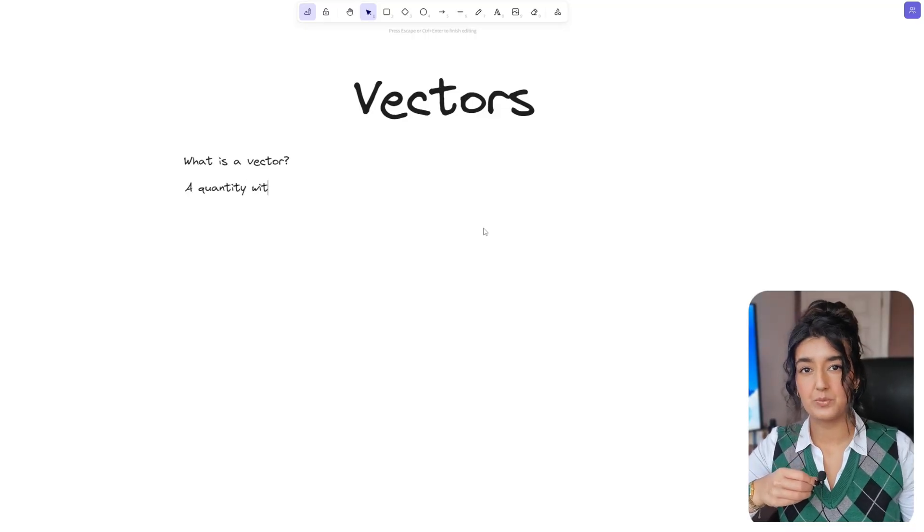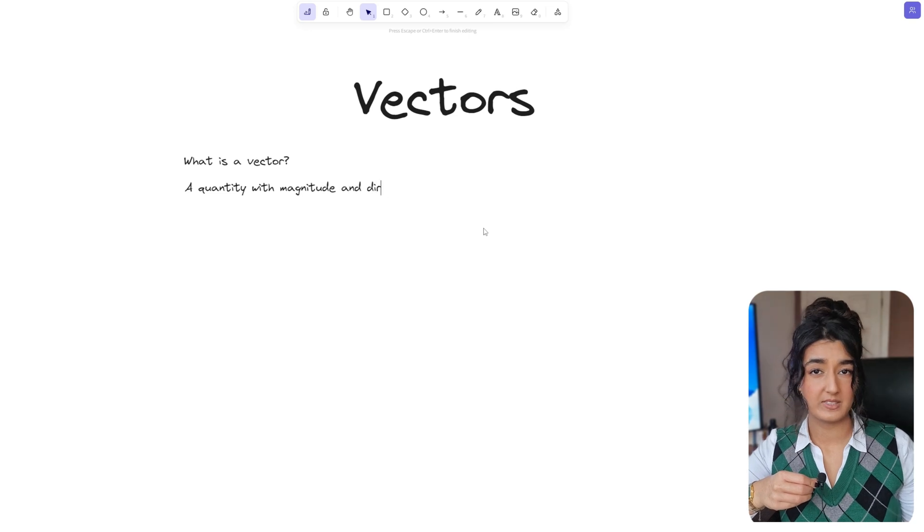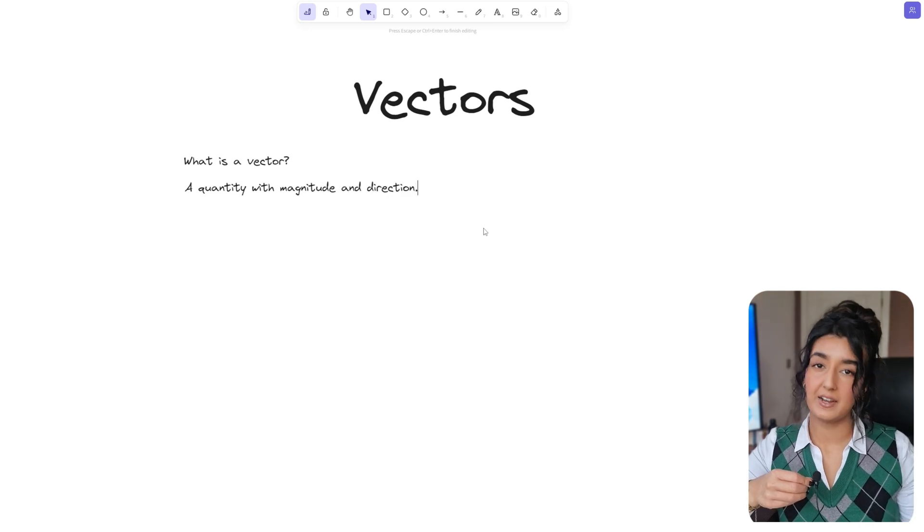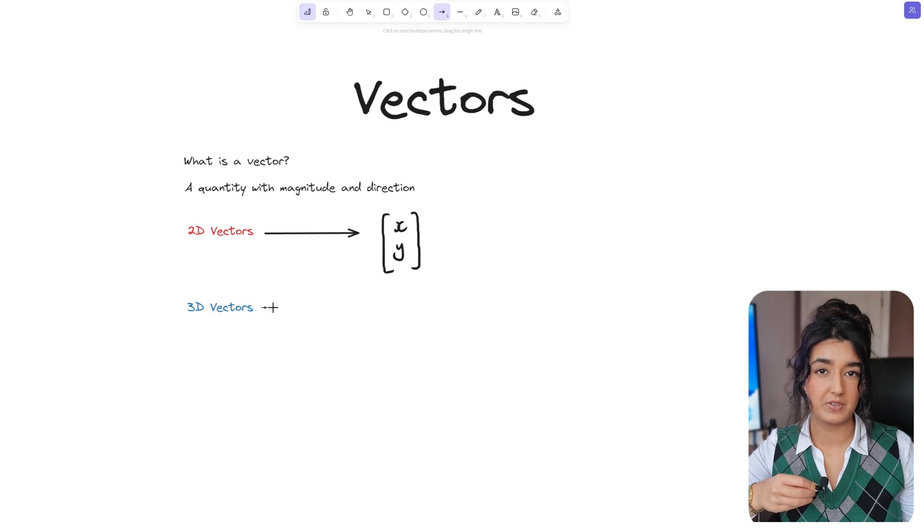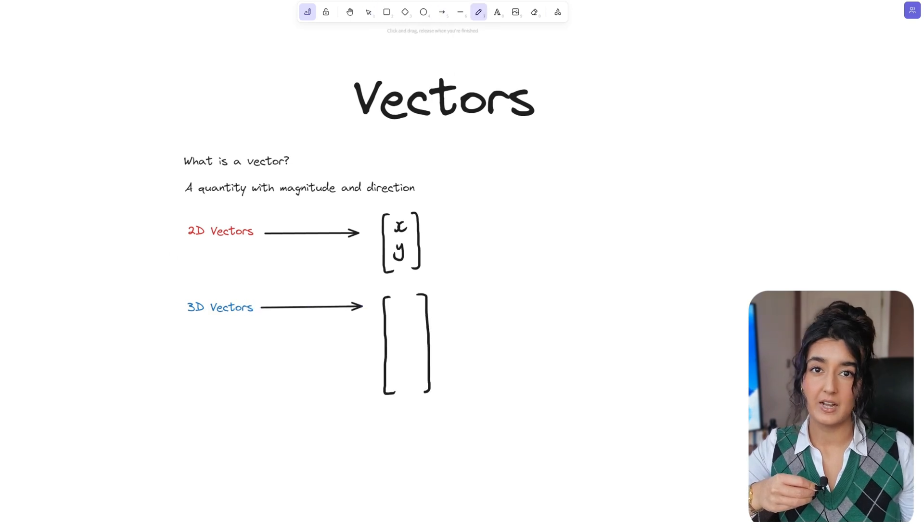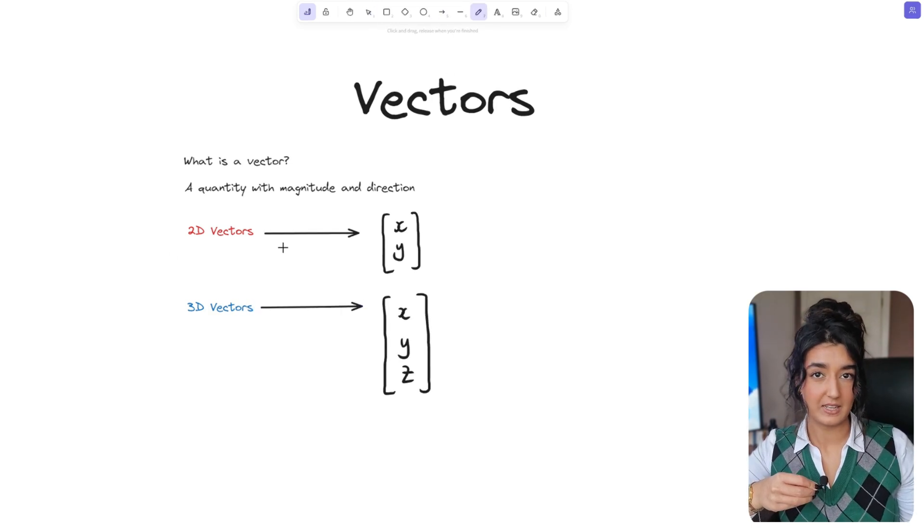Well a vector is a quantity with a magnitude or in simple terms length and a direction. When we're working in 2D vectors are defined by the values x and y and in 3D they are defined by the values x, y, and z and in maths they are represented like this.